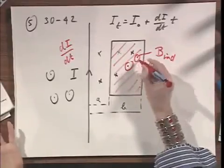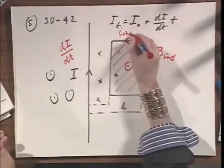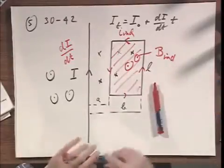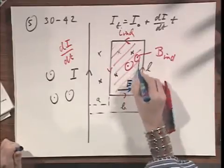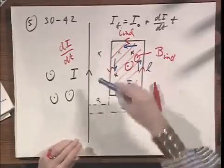How can you get a B-induced in this direction? It's only possible if you have an I-induced in this loop in this direction. Therefore, electric fields in the wires that contain resistance in this direction.